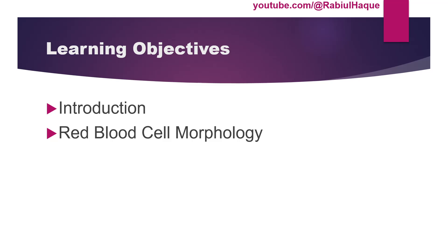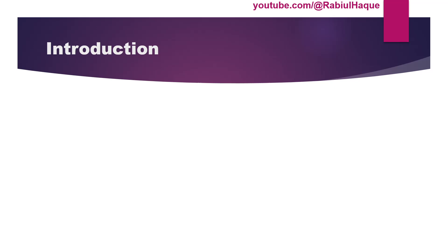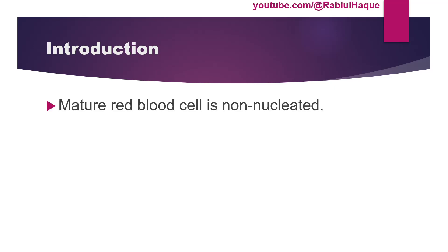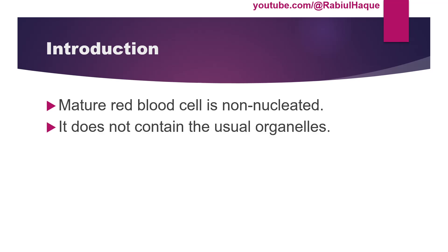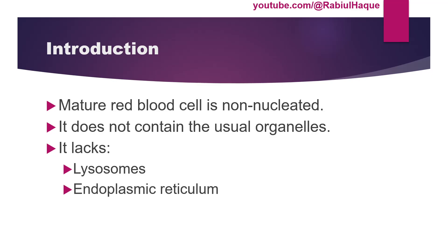Always remember mature red blood cells are non-nucleated. That means they do not contain a nucleus and also they lack the usual organelles. For example, they lack lysosomes, endoplasmic reticulum, mitochondria, etc.